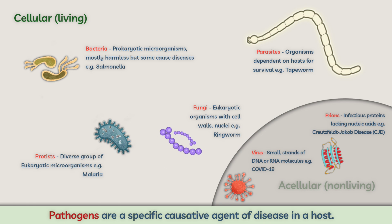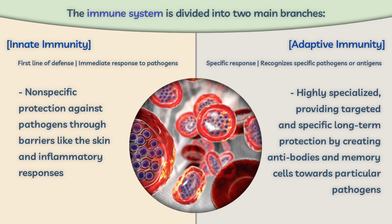The immune system is divided into two main branches: innate and adaptive immunity. Innate immunity is the first line of defense, providing immediate but non-specific protection against pathogens through barriers like the skin and inflammatory responses. Adaptive immunity has a specific response — it recognizes specific pathogens or antigens, providing targeted, long-term protection by creating antibodies and memory cells. The key distinction is that innate immunity is non-specific and cannot gain immunological memory, whereas adaptive immunity is specific and more advanced, with the ability to respond more effectively to previously encountered pathogens.